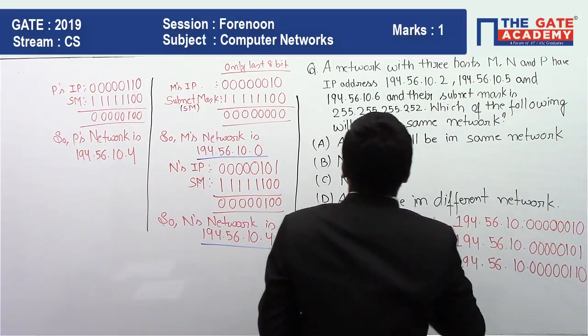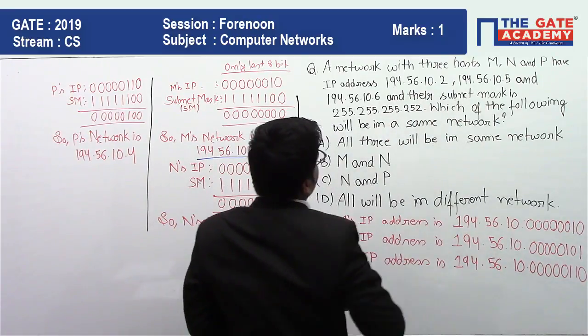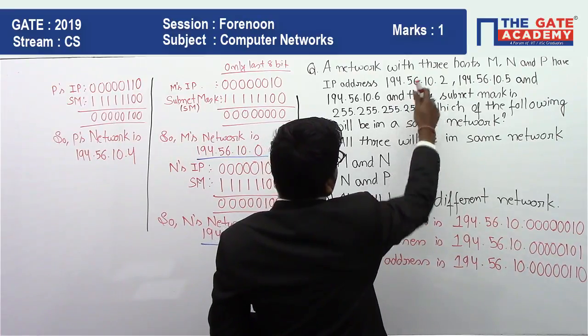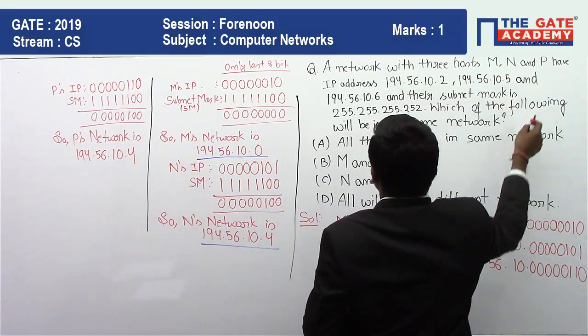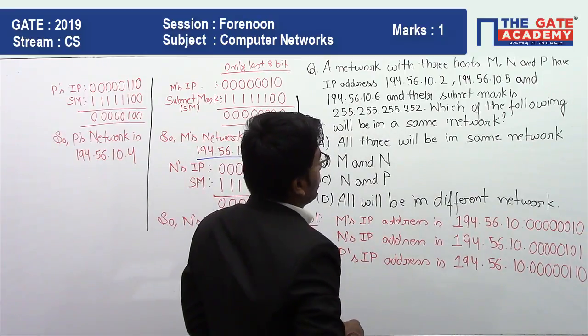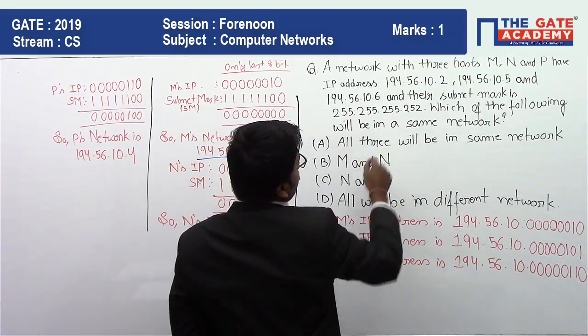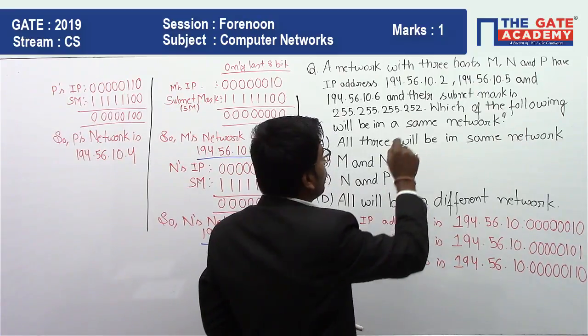They have IP addresses 194.56.10.2, 194.56.10.5, and 194.56.10.6. Their subnet mask is given as 255.255.255.252.